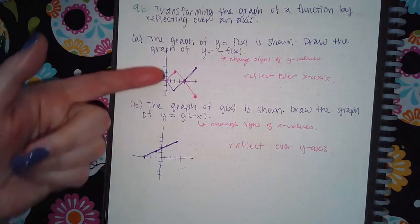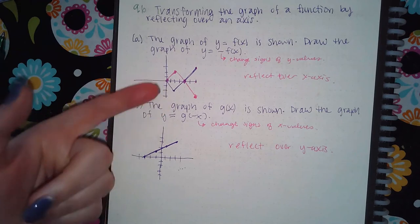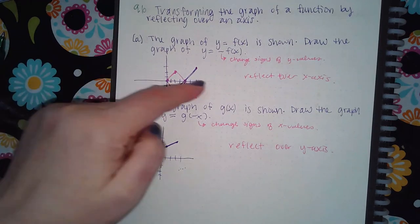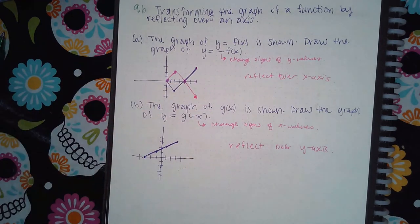And then you notice that these are mirrors of each other, the pink and the purple, over the x-axis. So it's like the x-axis is the mirror, and you see the reflection over that mirror.